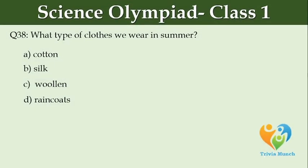What type of clothes do we wear in summer? Option A: Cotton. Option B: Silk. Option C: Woollen. Option D: Rain coats.